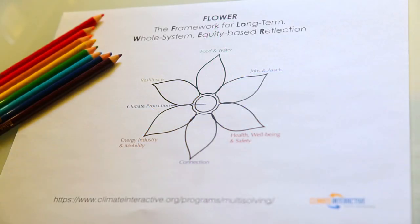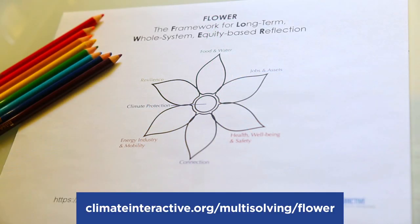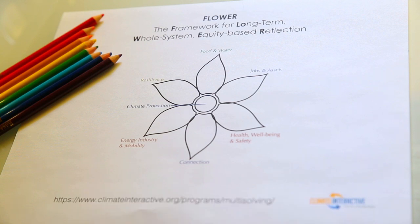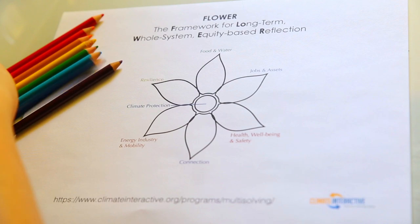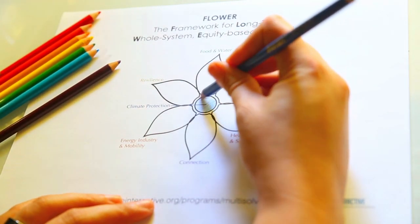Let's create our own flower diagram. It's as easy as printing out a copy of a blank flower diagram from our website and coloring it in with whatever you have on hand. Our subject is an organization called Plant It Forward Farms, which trains refugees in Houston to set up organic farming businesses. Urban farms reduce greenhouse gas emissions by reducing the need for food transportation, so we know this policy is protecting the climate.